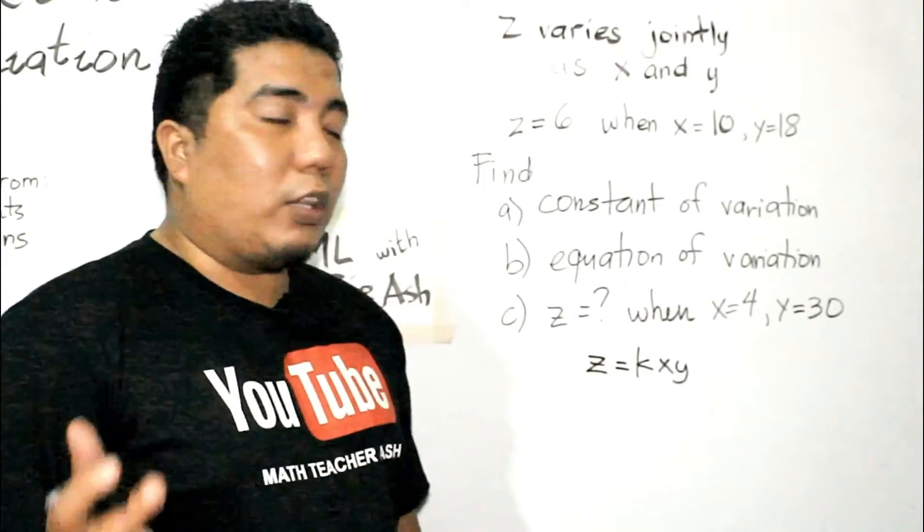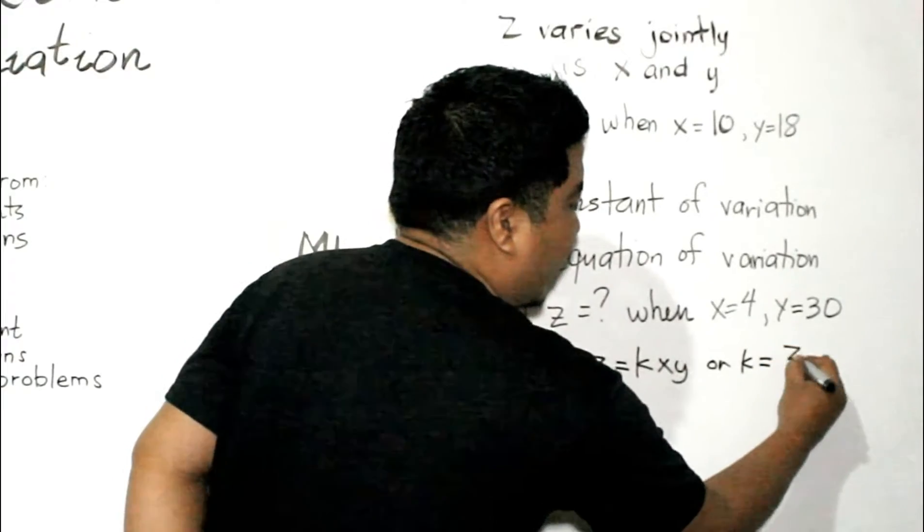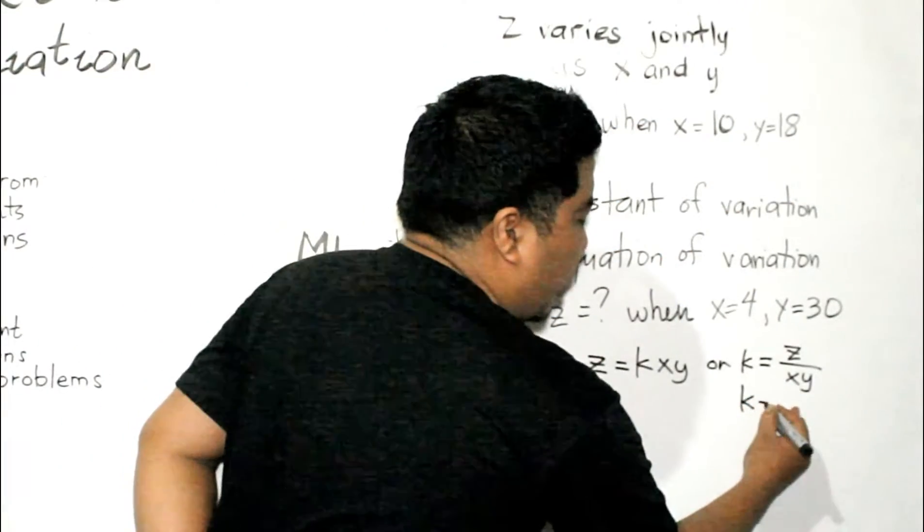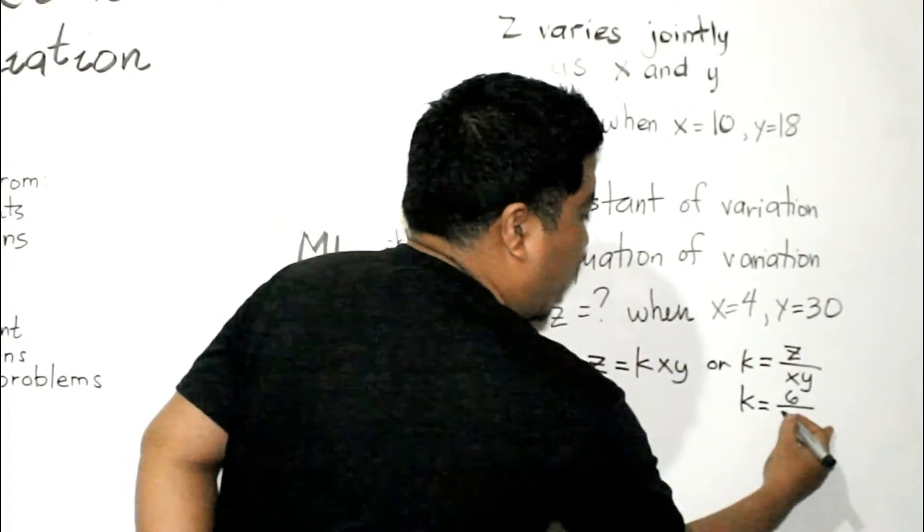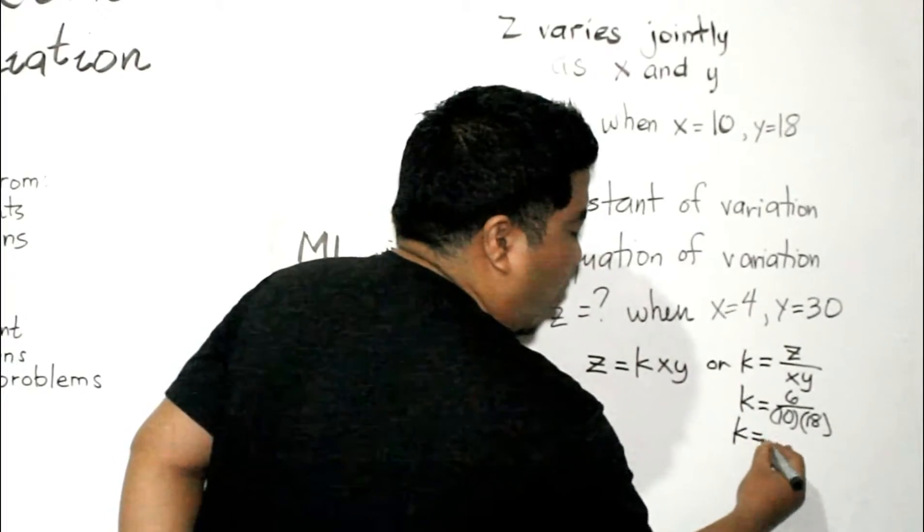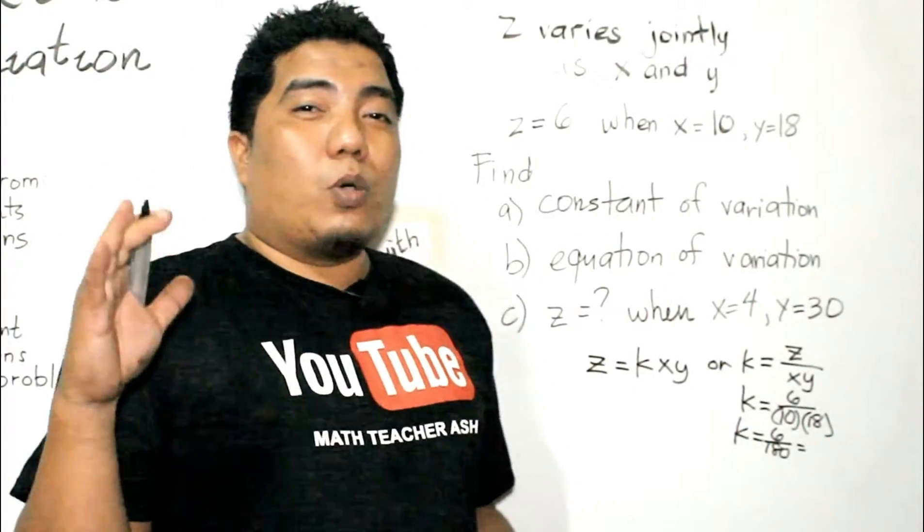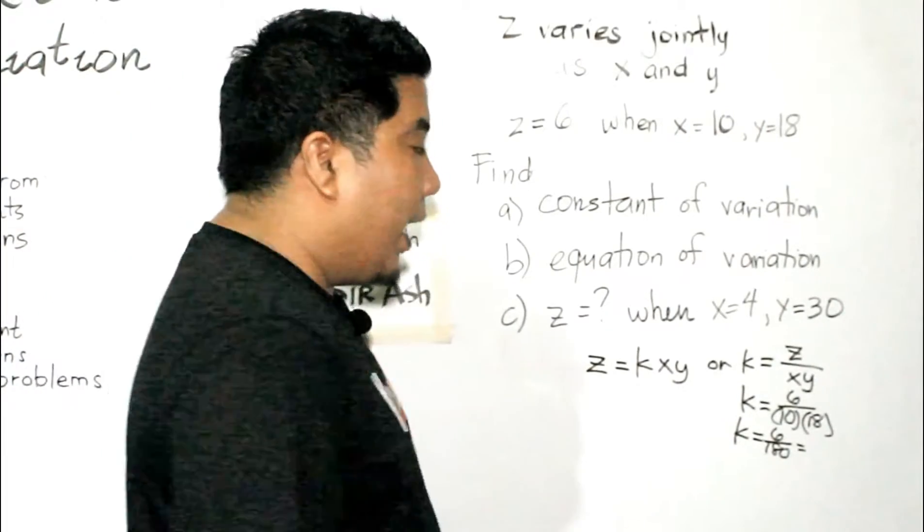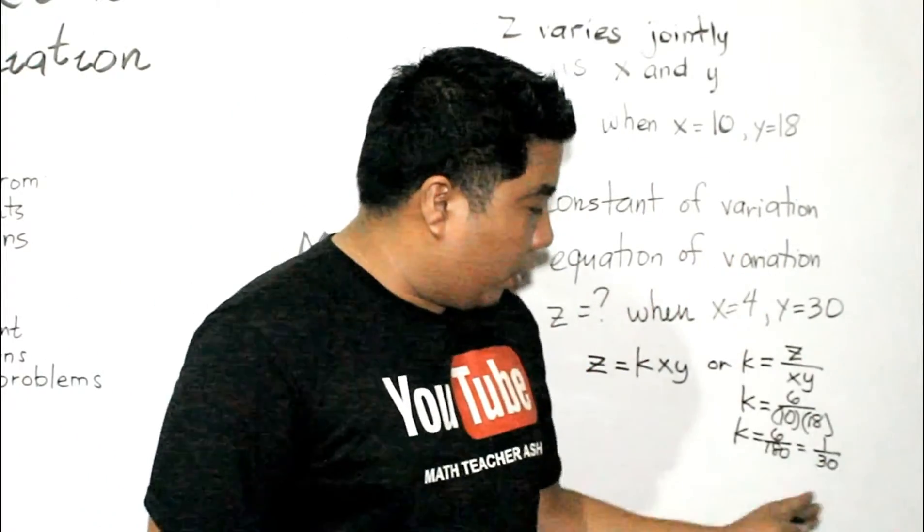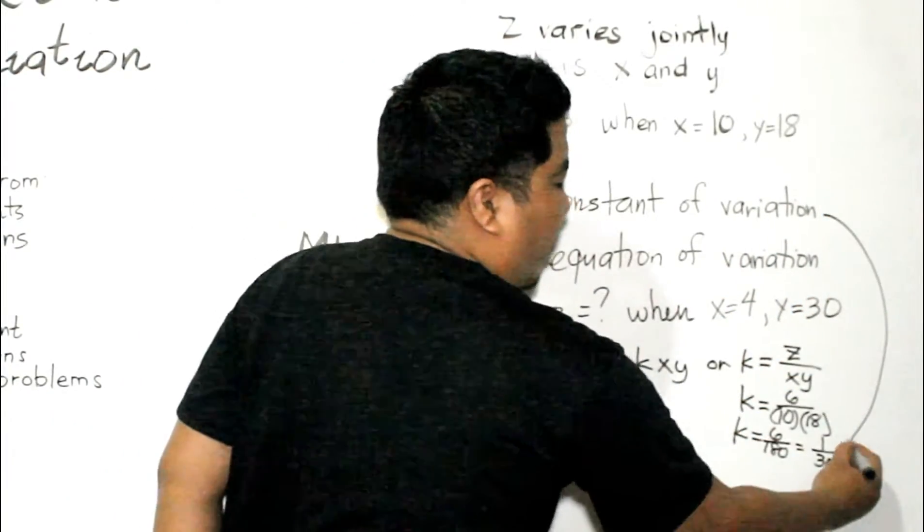Now, how do you solve for your constant of variation? You can derive your constant formula from this given equation and that is k is equal to z divided by x times y. So, since we have already our given, what we need to do is to substitute. Our z is 6, our x is 10, and our y is 18. So, by simplifying, we have 6 over 180. Now, can 6 be divided by 180? For sure, you can. So, what we can do is we just need to get the lowest term of 6 over 180 and the answer for that is 1 over 30 by dividing 6 to both the numerator and denominator. So, your k is 1 over 30. That will be the answer for your letter A.